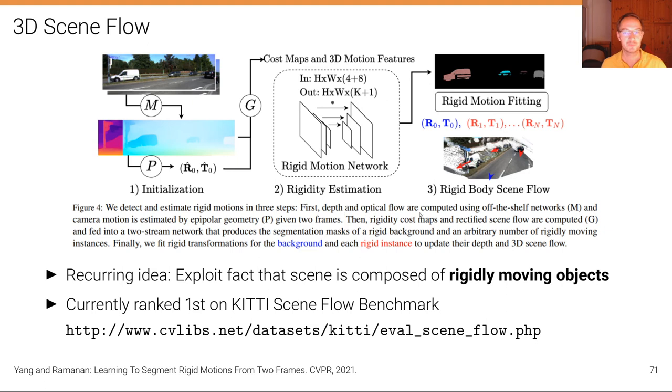First, depth and optical flow are computed using off-the-shelf networks M. This is leading to depth and optical flow here really computed separately. And camera motion is estimated by epipolar geometry given two frames.